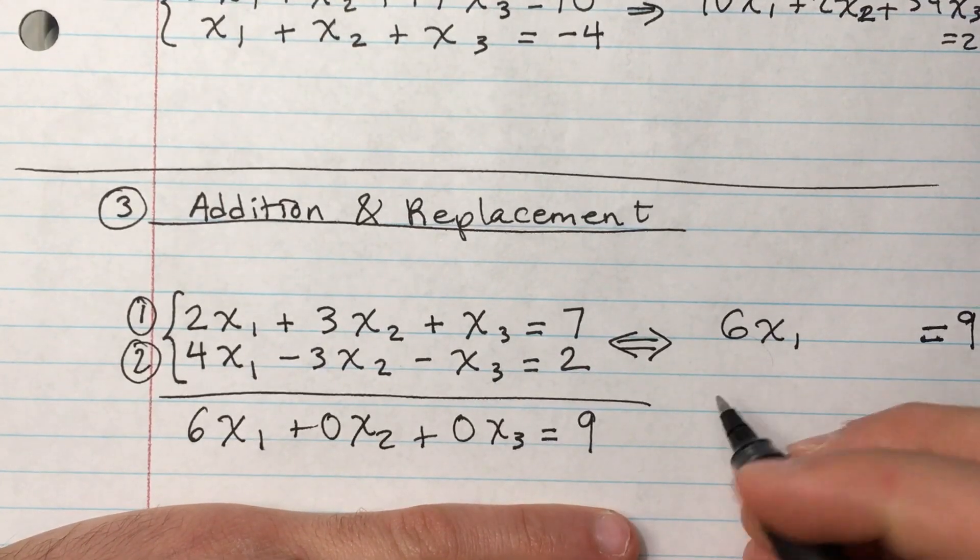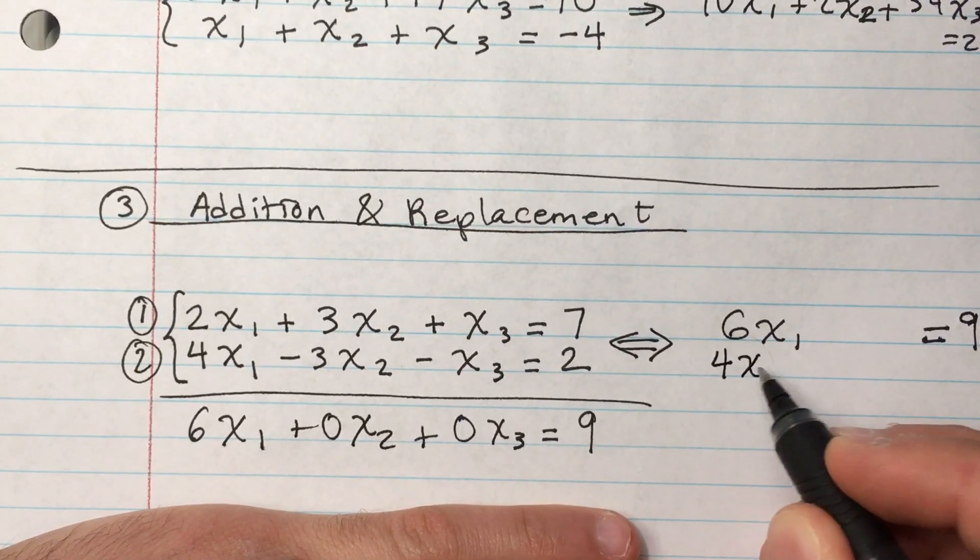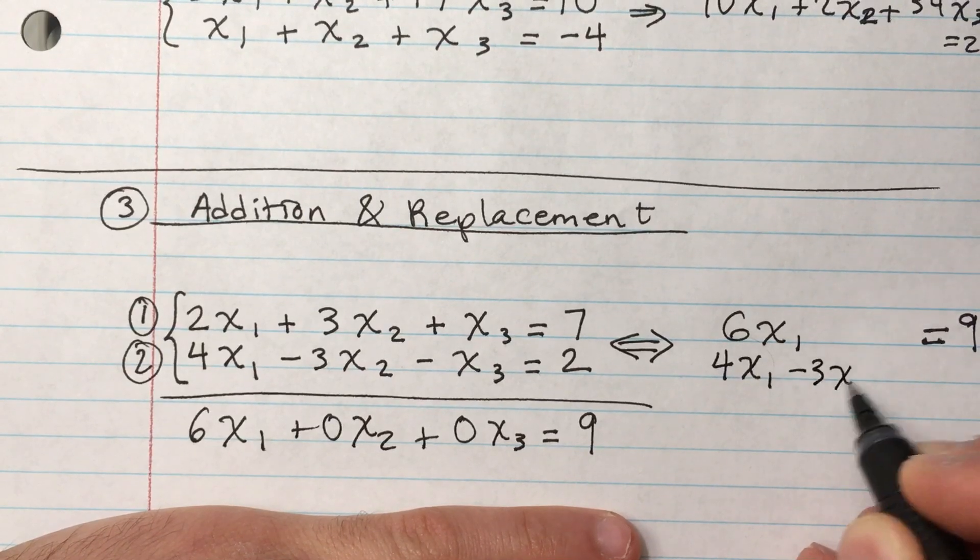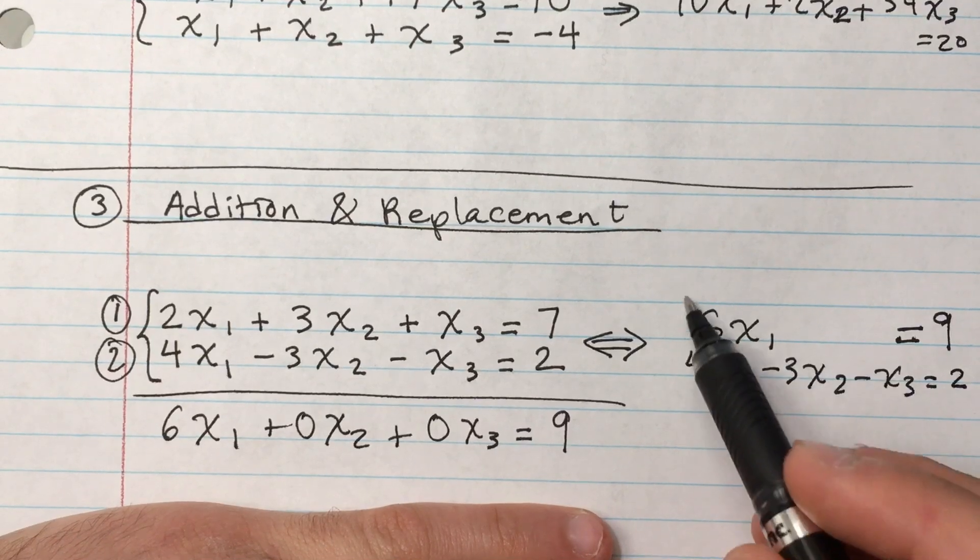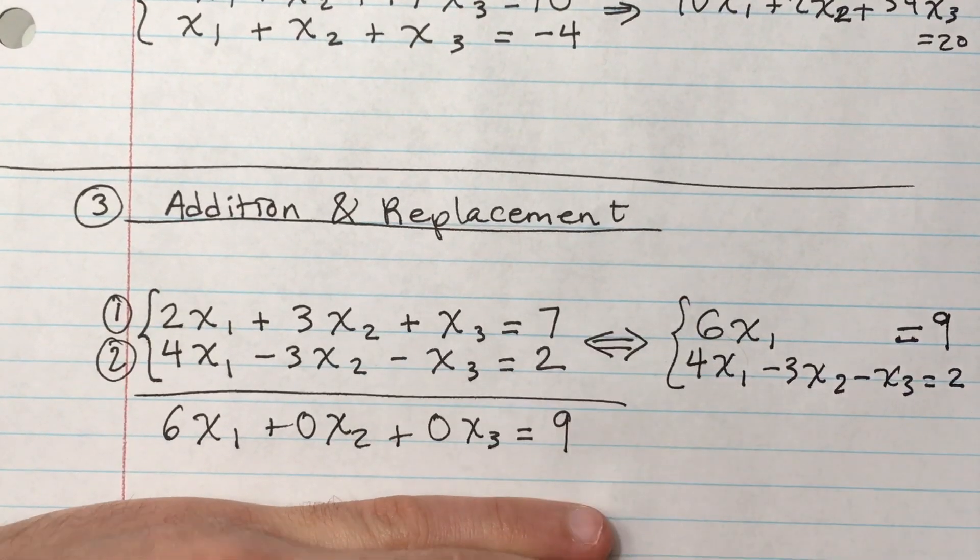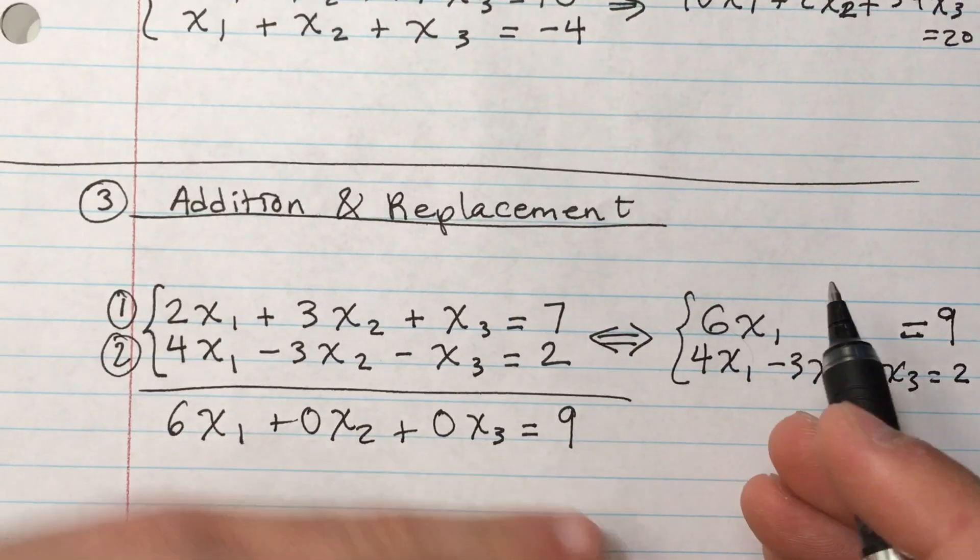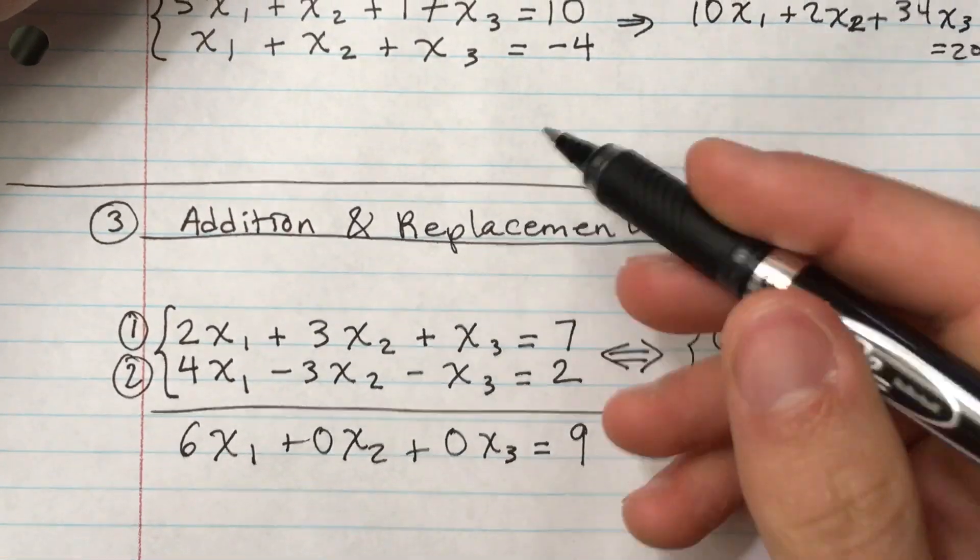All right, so I decided to replace it with equation 1, and equation 2 you just write it the way it was, it's still 4x₁ minus 3x₂ minus x₃ equals 2. Okay, and that's it, that's our new system and it's equivalent to that one.